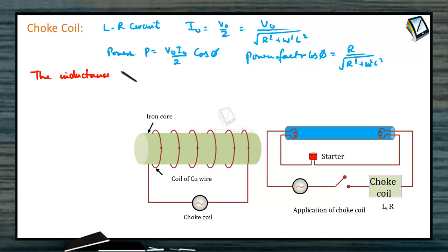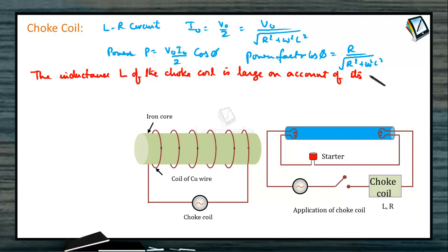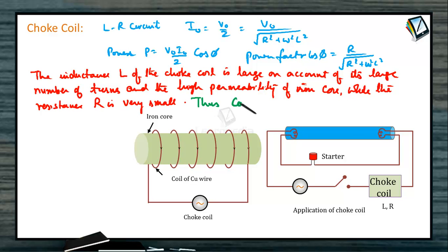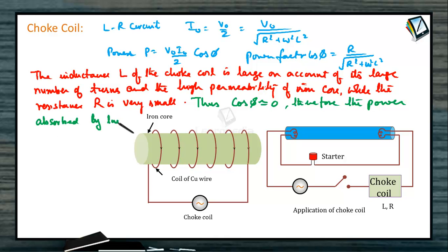The inductance L of the choke coil is large on account of its large number of turns and the high permeability of the iron core, while the resistance R is very small. Thus, cos φ tends to 0, and therefore the power absorbed by the coil is small. The choke coil reduces current without losing energy. The wastage of energy is only due to eddy currents and hysteresis loss in the soft iron core.